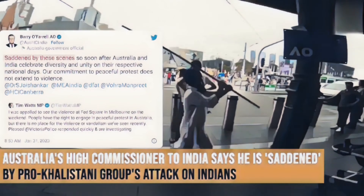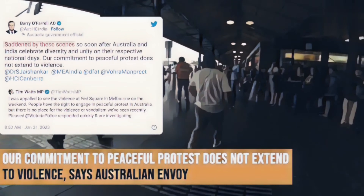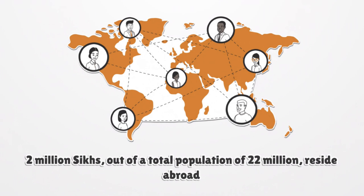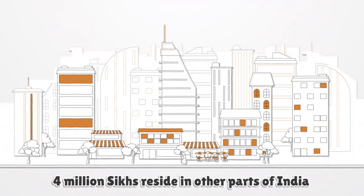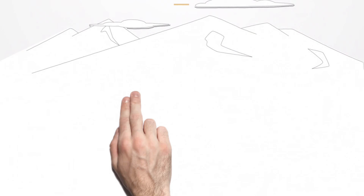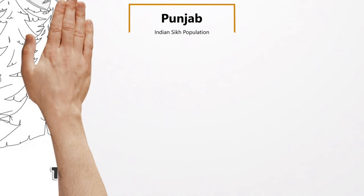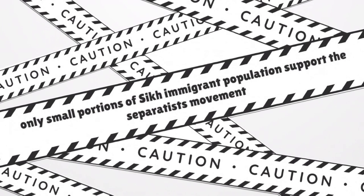From the time it started as a minor movement for a Sikh homeland in the 1960s to the present, the movement has witnessed various ups and downs among immigrant Sikhs. Indian government is understandably concerned as the Sikh diaspora represents a large portion of the vibrant Sikh community. Nearly 2 million Sikhs out of a total population of 22 million reside abroad, 4 million Sikhs reside in other parts of India, while 16 million live in the state of Punjab. A Sikh diaspora that represents nearly 10% of the total Sikh population has a strong voice, especially with its presence in Western liberal democracies. Notwithstanding its strength, only a small portion of the Sikh immigrant population supports the separatist movement. However, modern means of communication along with guaranteed liberties and freedoms in Western societies have provided the separatists with a louder voice.